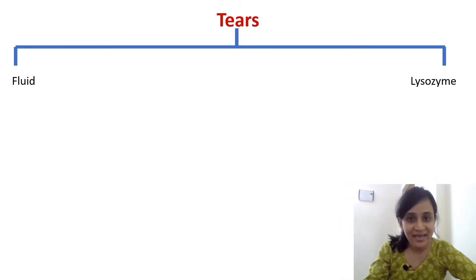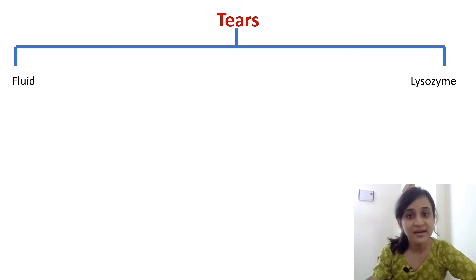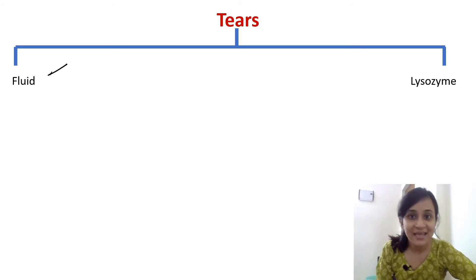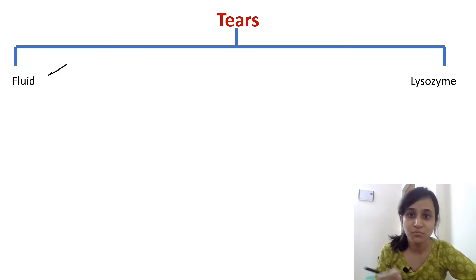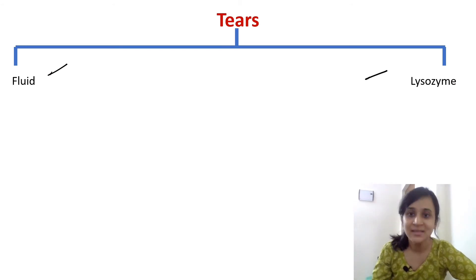Our eyes secrete tears. Tears keep the eye watery and maintain the fluidity of the eye surface, which prevents microbes from settling there. Tears also contain lysozyme, and we already know that lysozyme has antibacterial properties.